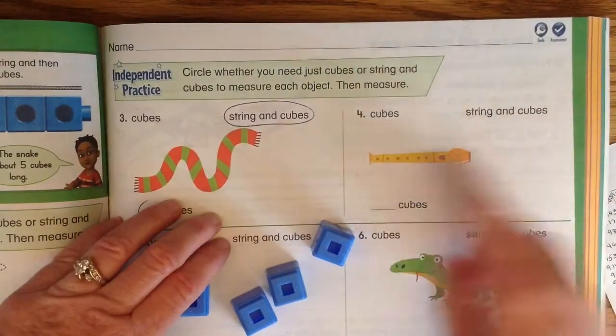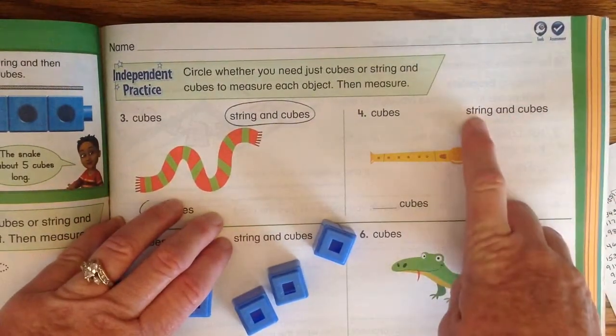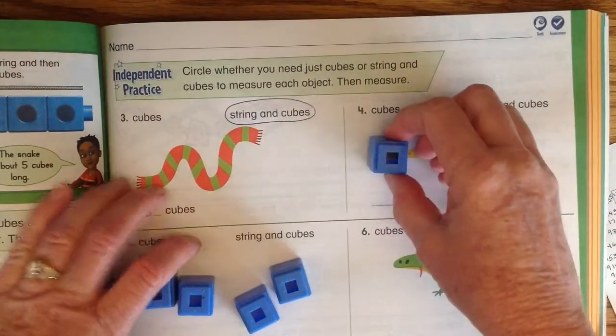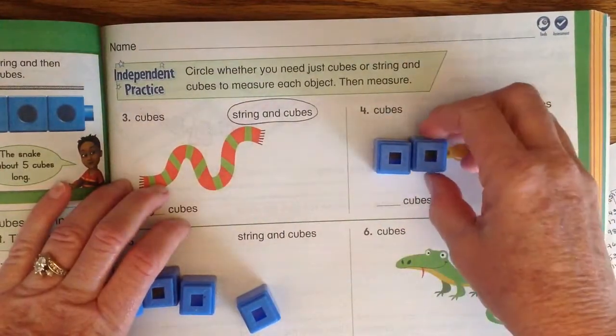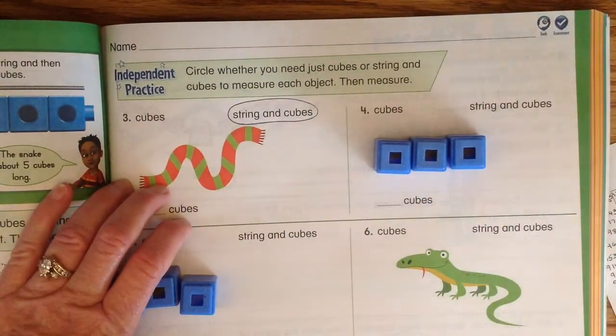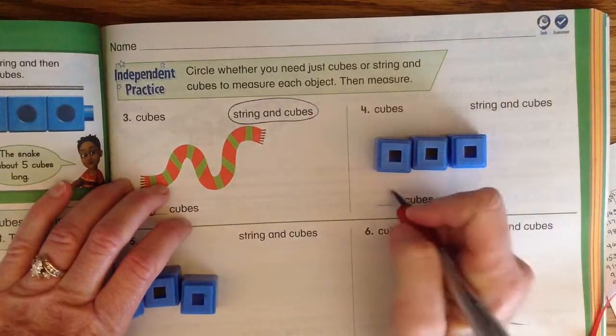Now the flute is already straight so do we need string? No. We can just set the cubes down. One, two, three. It's about three cubes long.